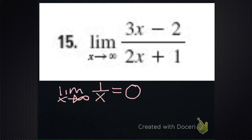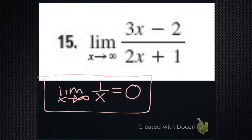We need to use this property: the limit as x goes to infinity of 1 over x is 0, because your fraction gets smaller and smaller and smaller until it's eventually approaching 0.